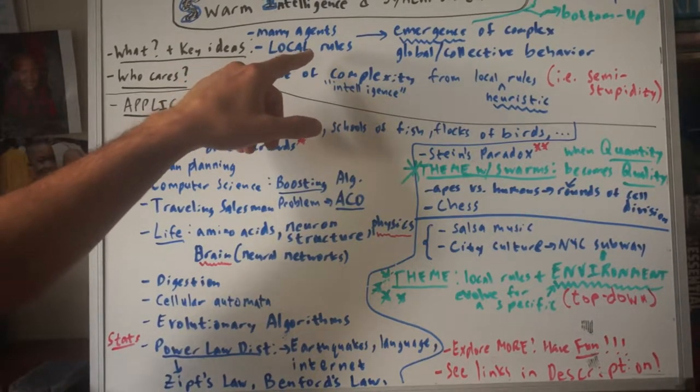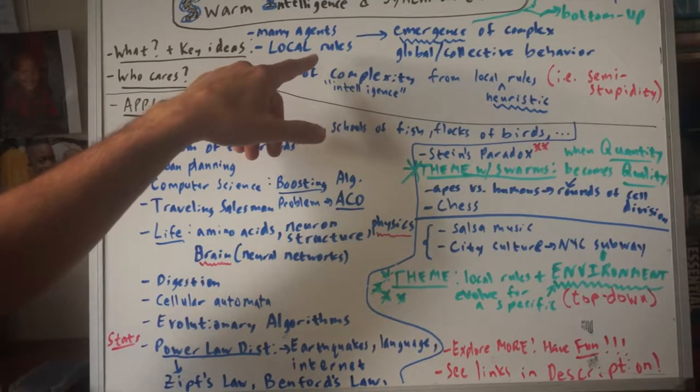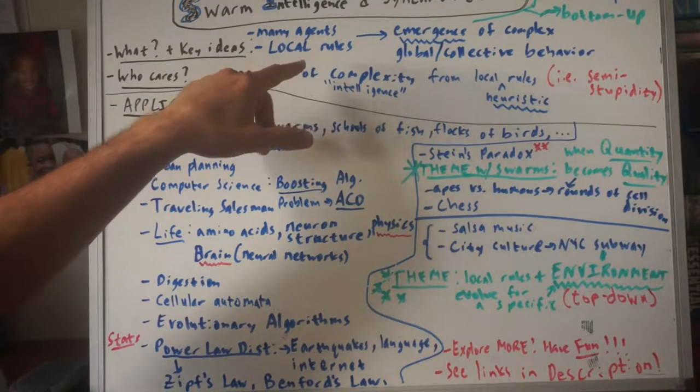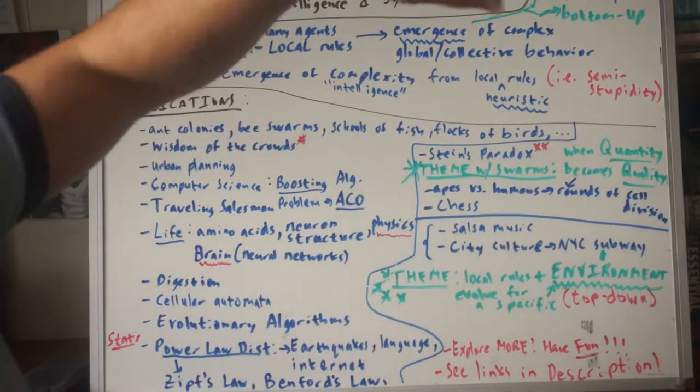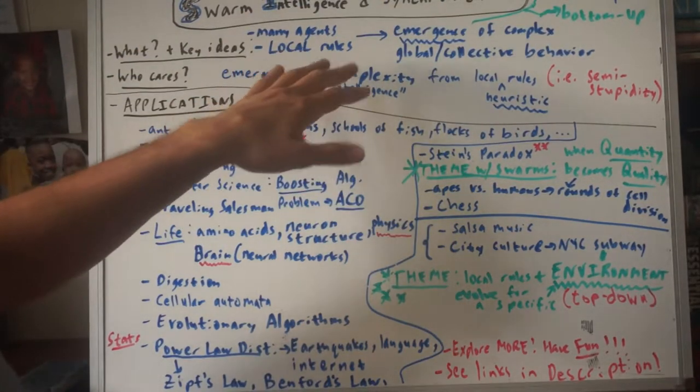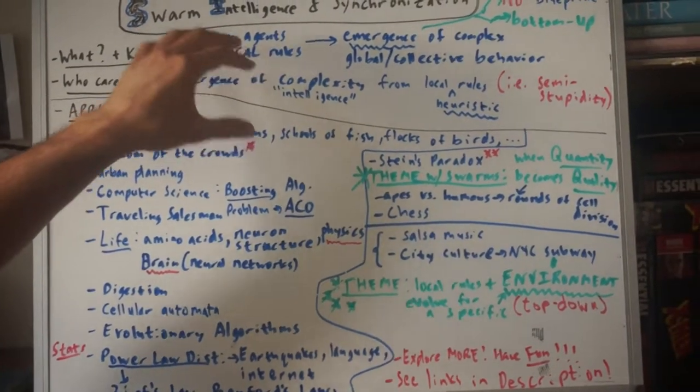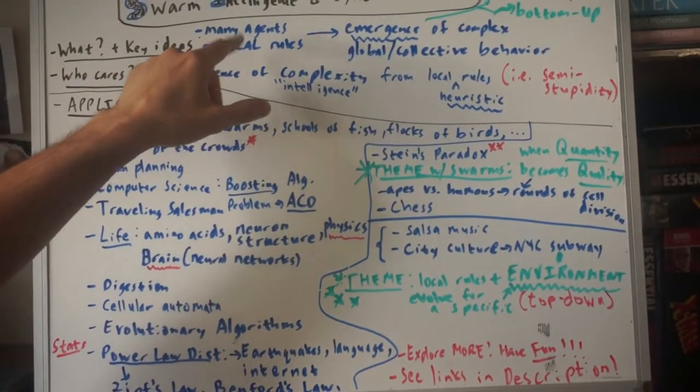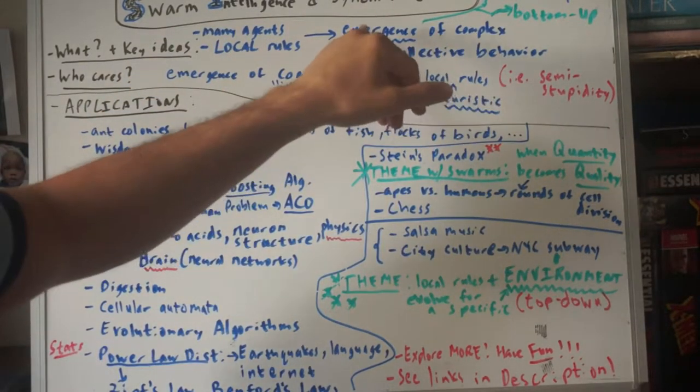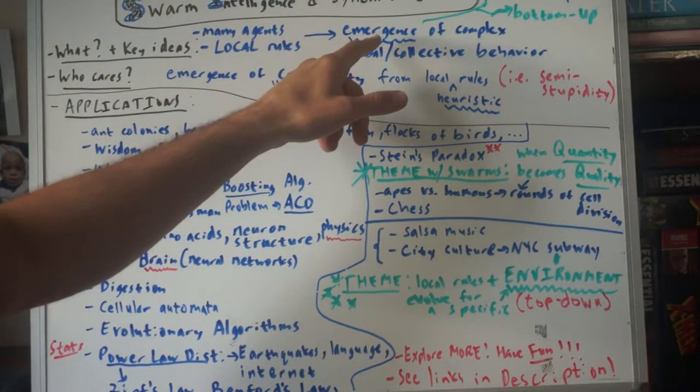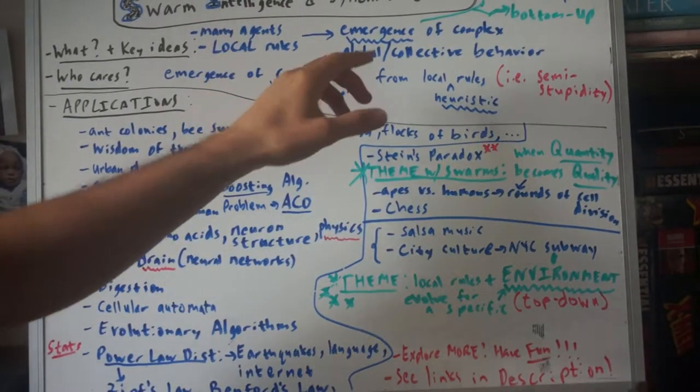There's some local rules. So the local rules, for example, let's say this is a school of fish. The local rule would be stay three feet away from your neighbor. In other words, you don't have access to what the guy 700 feet away is doing. So only stuff dealing with your neighbors and yourself. And from these, following some local rules and many agents, there is a complex behavior that emerges. The key word here is emerges.